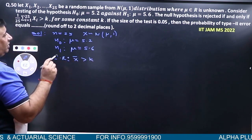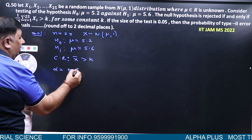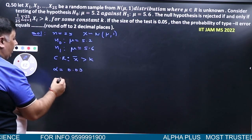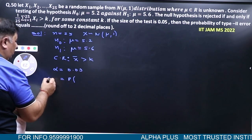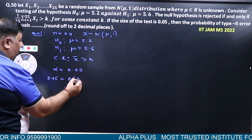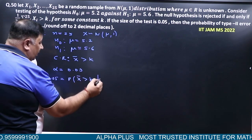The size of the test alpha is 0.05. Then the type I error probability: reject H₀ given H₀ is true. X̄ is greater than K given H₀ is true.